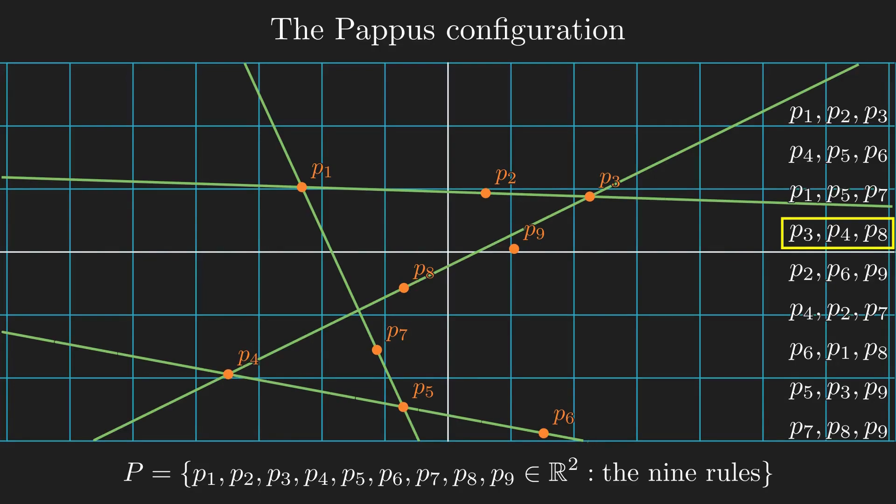I've applied four rules so far. Note that these rules can be applied in any order, but the order that I'm doing now is best for understanding the Pappus configuration. I'll let the animations quickly do the next four.